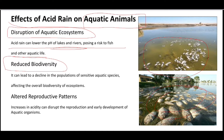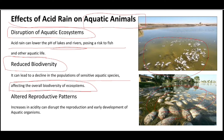The second effect on aquatic animals is reduced biodiversity — acid rain can lead to a decline in the population of sensitive aquatic species, affecting the overall biodiversity of the ecosystem. The third effect is altered reproduction patterns — acid rain can disrupt the reproduction and early development of aquatic organisms, harming the development of fish and other aquatic animals.